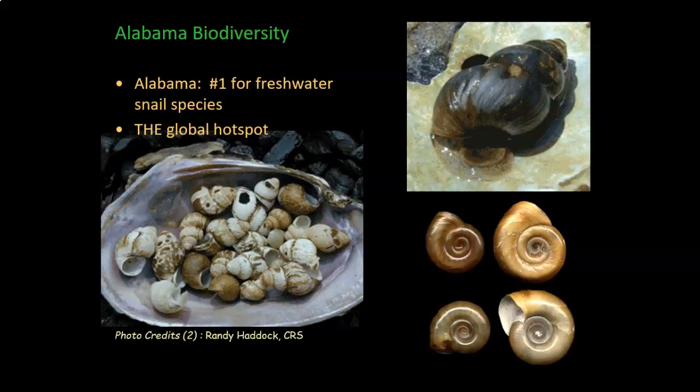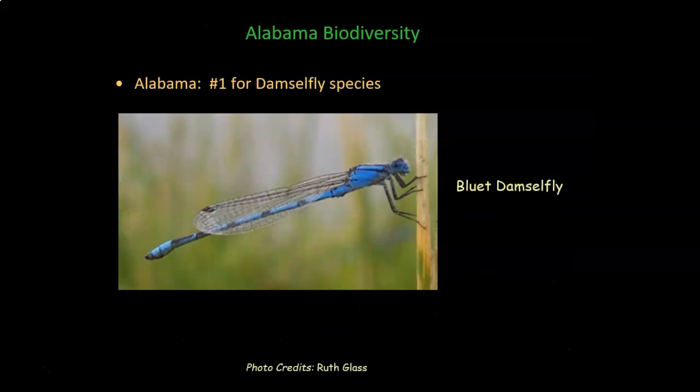Another group we're famous for is freshwater snails. We're the number one state for freshwater snails, and again we are the global hotspot for freshwater snail biodiversity. We're also number one for damselfly species — those little insects you see flying around, often near wetlands, brightly colored and kind of like dragonflies in the way they fly.